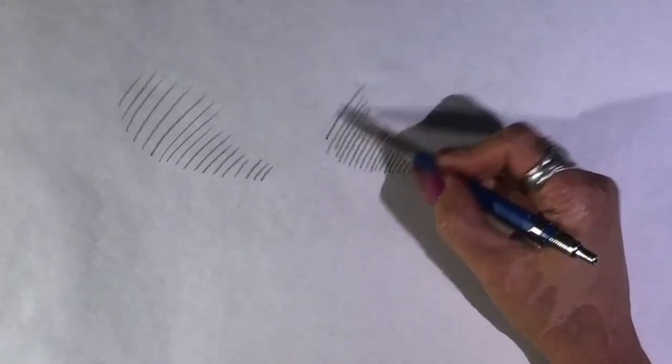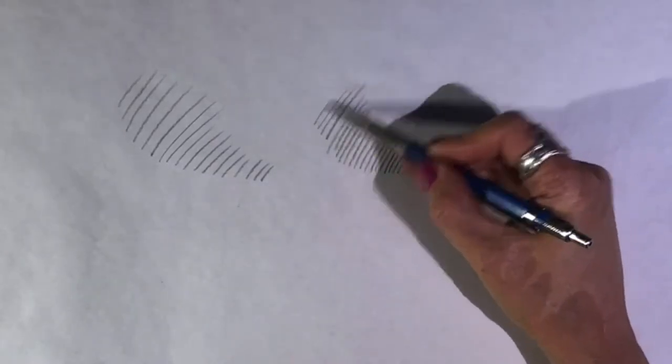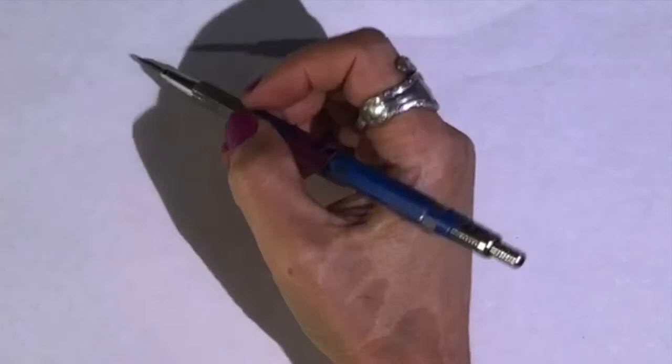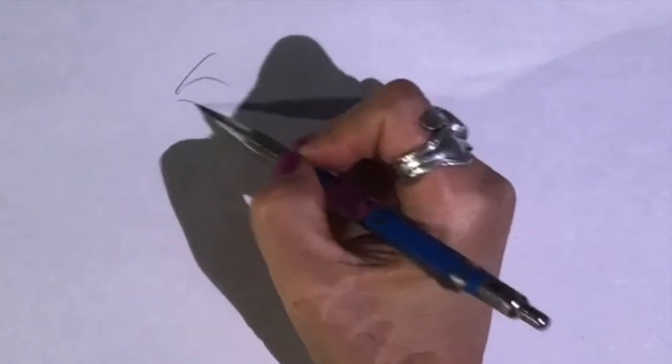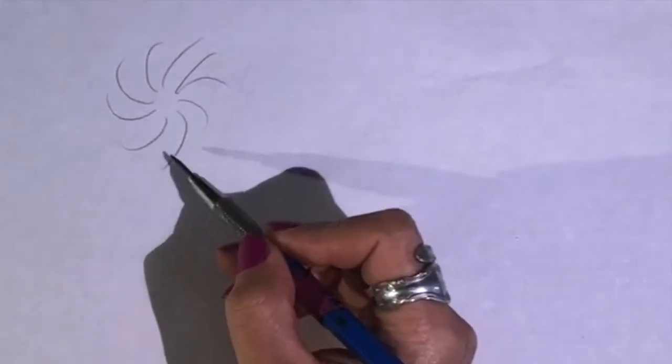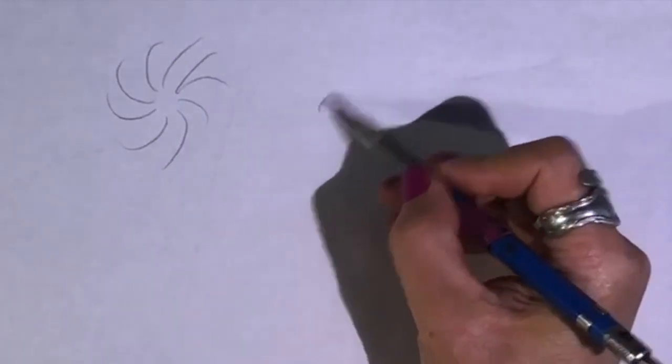All right so I've done two sets. Maybe I'll do a little more on this one. The next thing that we're going to do is draw what I call pinwheels and this is going to be simply a hatch drawing of what looks like a pinwheel.